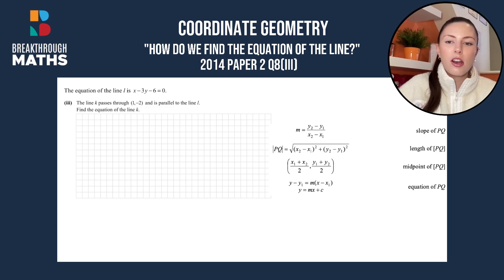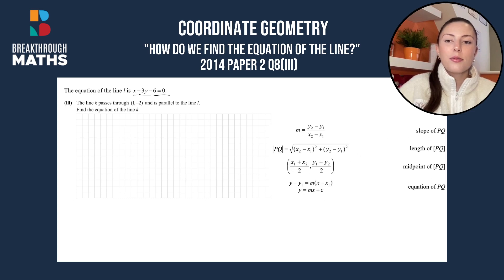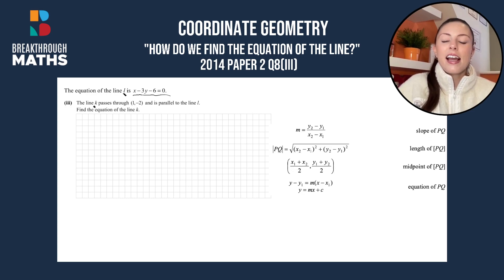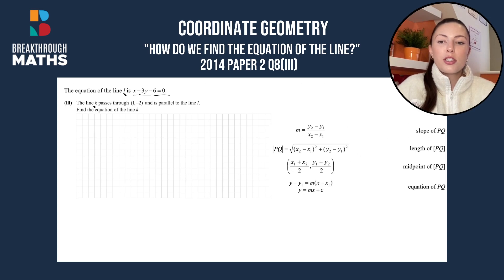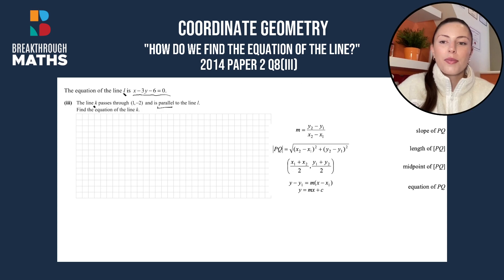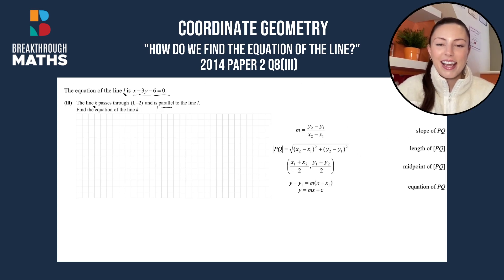We're told we have the equation of the line L and it's x minus 3y minus 6 is equal to 0. We're told the line k — a different line — passes through the point (1, -2) and is parallel to the line L. Find the equation of the line k.